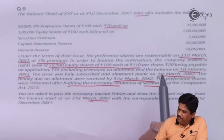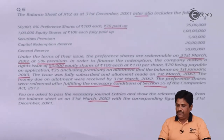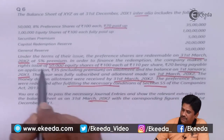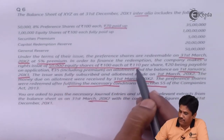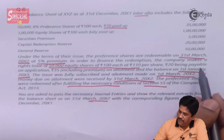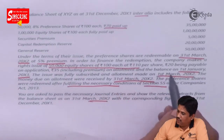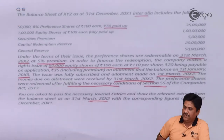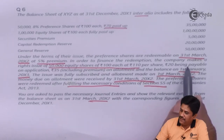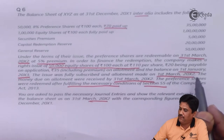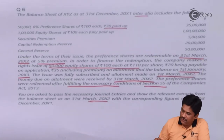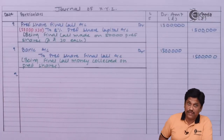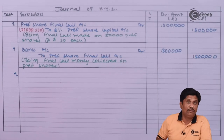Now my preferences are fully paid. Under the terms, preferences are redeemable on 31st March 20X2 at 5% premium. The company makes a right issue of 50,000 equity shares of Rs 100 each at Rs 110 per share — Rs 20 on application and Rs 35 including premium on allotment, and balance on 1st January 2003. We need to pass entries for application money and allotment money.